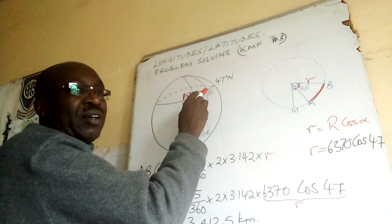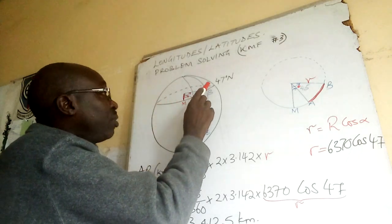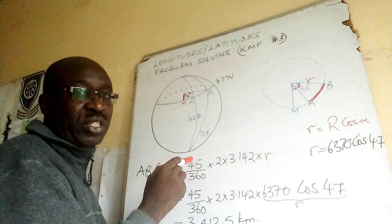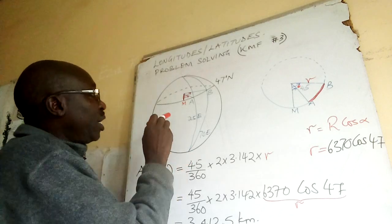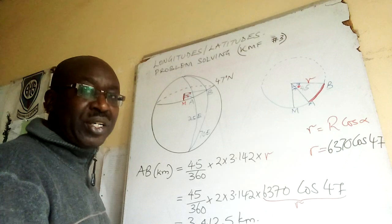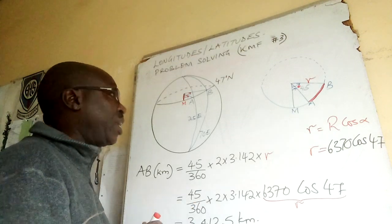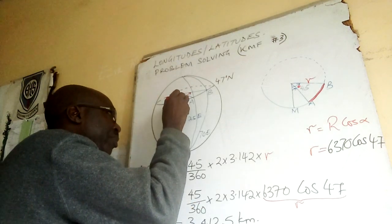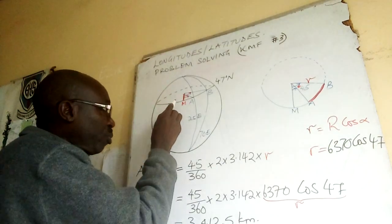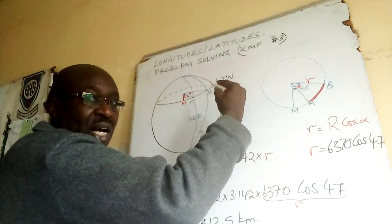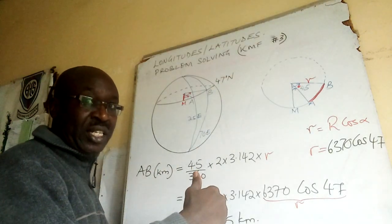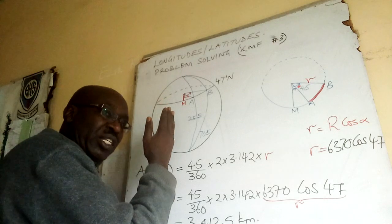We have this latitude and I have done dotted to show you it's a small circle. Then our angles east and west are measured with respect to meridian. So I will put here our meridian here. From here I can measure 25 on the right hand side, that is east.